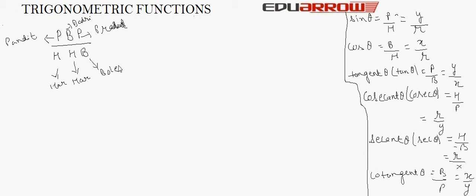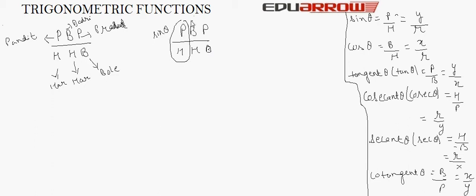Now how can we remember the ratios using this rule? The letters stand for P, B, P over H, H, B — that is perpendicular, base, perpendicular over hypotenuse, hypotenuse, base. The first ratio — P over H — is sin theta. The next — B over H — is cos theta. And P over B is tan theta.